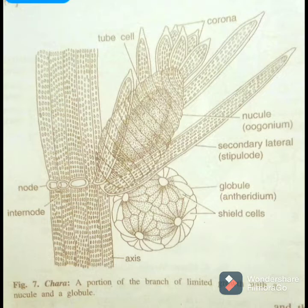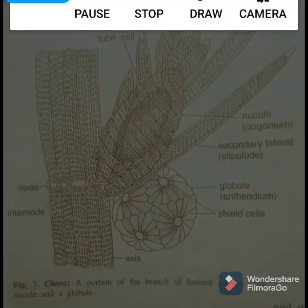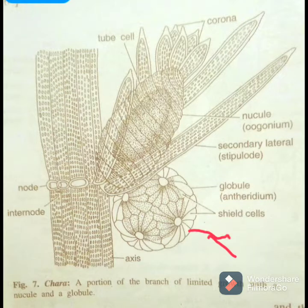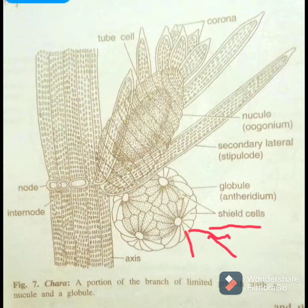Its wall is made up of eight cells, referred to as shield cells. In the figure you can see around four shield cells, with the other four on the opposite side. The outer wall of these shield cells has many infoldings which form various types of ornamentations on the surface.